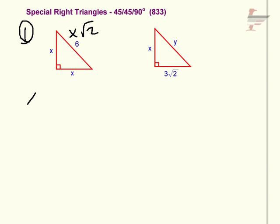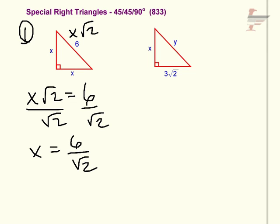So to find x, we have to solve x root 2, the hypotenuse, is equal to 6. If we divide both sides by the square root of 2, we will get x equals 6 over root 2.